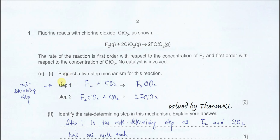Part A1 asks you to suggest a two-step mechanism for this reaction. Before you do this, you need to get the most important information from the question, which is the order. The order of the reaction cannot depend on the coefficients — if this is one mole and this is two moles, it does not mean first order and second order respectively. It must depend on the data or statements given in the question.